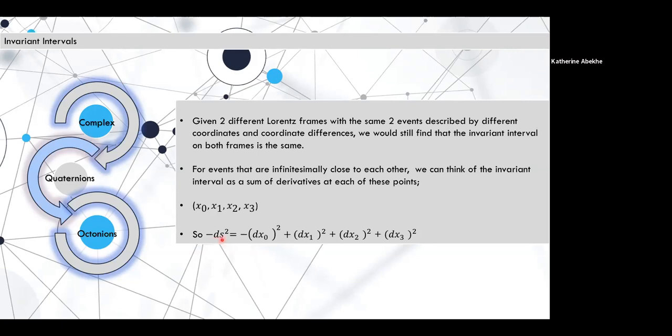The negative sign on the left-hand side, the one on the dS², that just means that for time-like separated events, where the time coordinate is greater than the sum of the spatial coordinates, we're going to see a positive invariant interval. And we can get a negative invariant interval, we can also get zero or invariant interval.